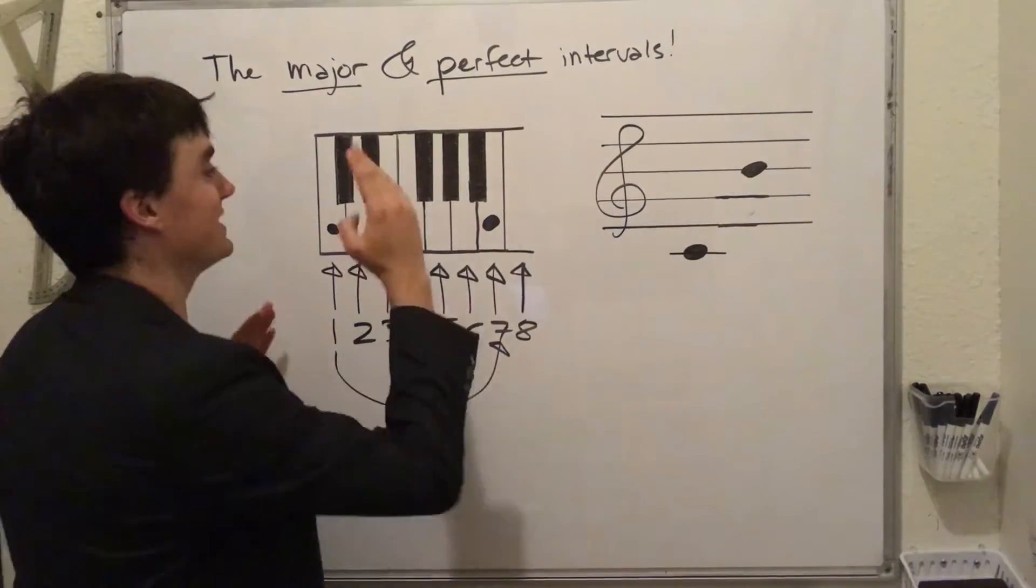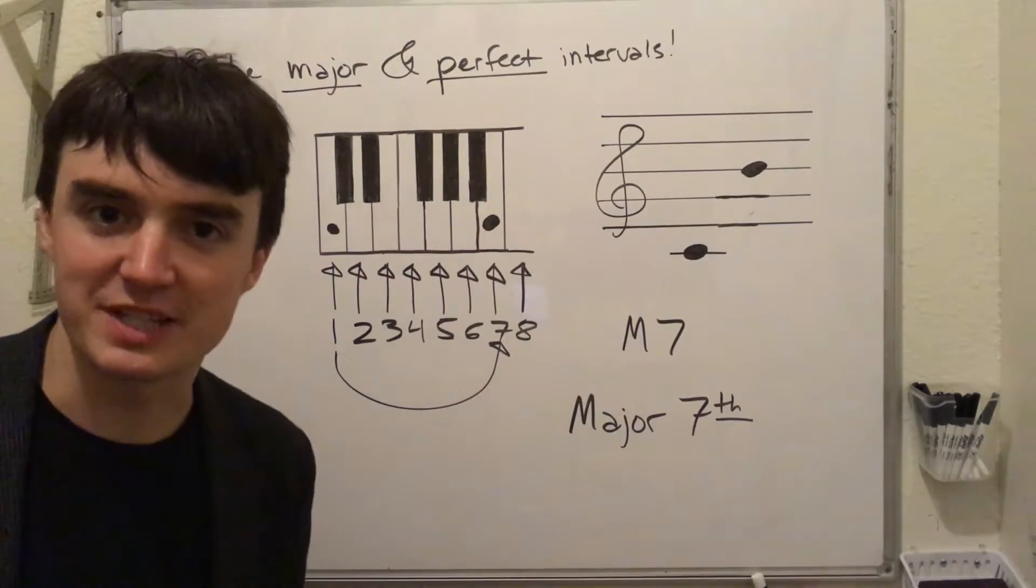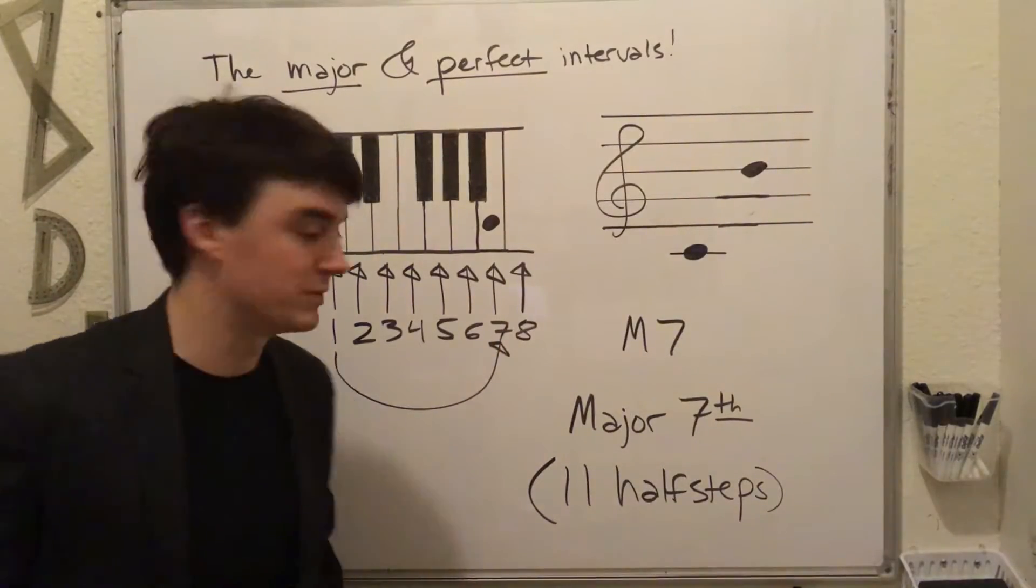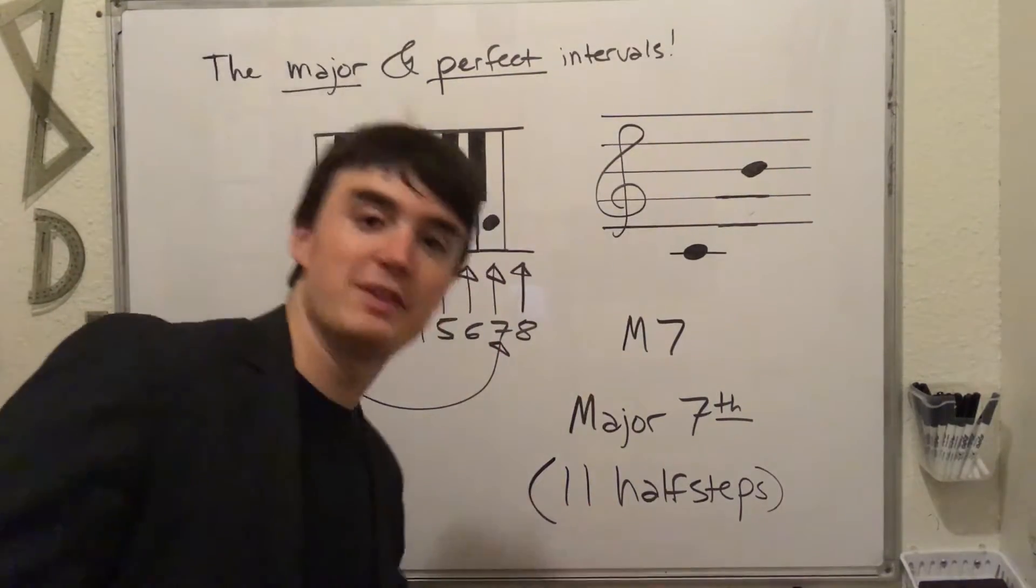So let's say you go from 1 to 7. Well, it's a major seventh. And we can just assume that we're 2 from the last one. So 2 plus 9, 11 half steps.